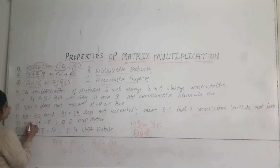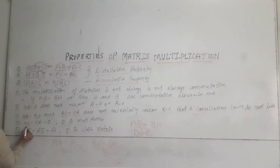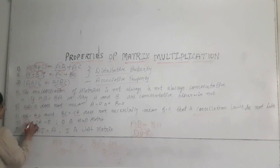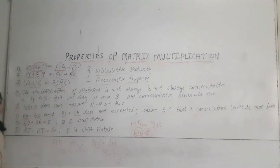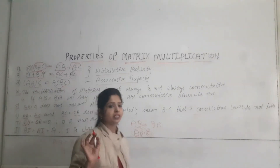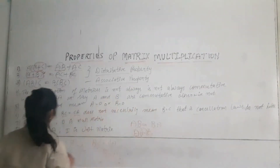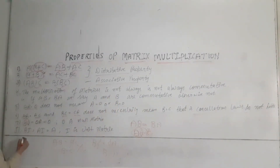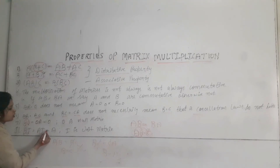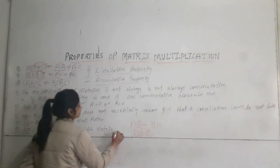Next, if AO is equal to OA, that means when we multiply any matrix by the zero (null) matrix, the resulting matrix will be the zero matrix. Additionally, when we multiply any matrix A by the identity matrix I, this is equal to IA, which equals the original matrix A.